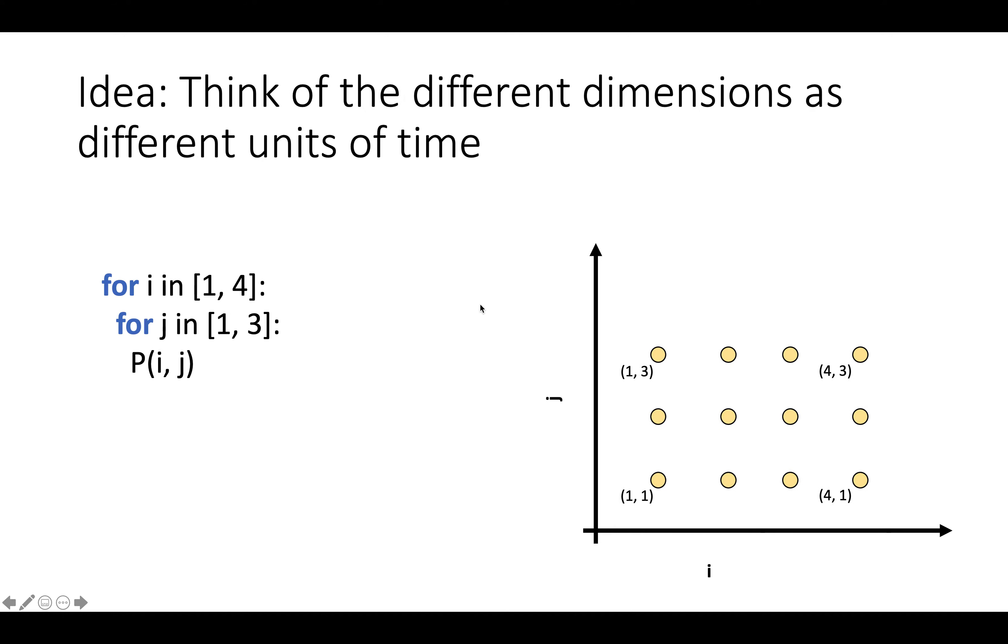So if you just go back and think about the order in which things happen in this loop nest, we do statement i equals 1, j equals 1, then we do the next iteration of the inner loop, which will be i equals 1, j equals 2, then i equals 1, j equals 3, then we'll be done with the inner loop, we'll go back to the next iteration of the outer loop, and i will become 2, and then we'll repeat the process.